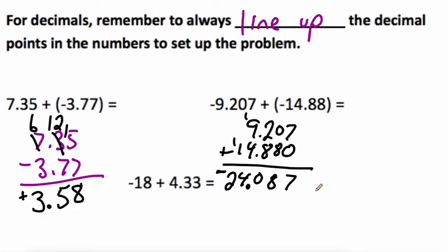Last one, negative 18 plus 4 and 33 hundredths. They have different signs so I'm going to have to subtract. 18 is bigger so 18 goes on top but I need to add my decimal and two zeros in order to be able to line them up. And I have 4.33.